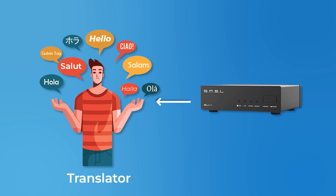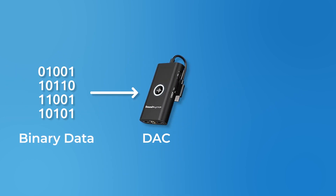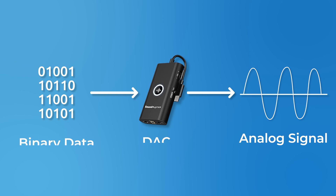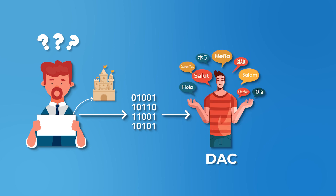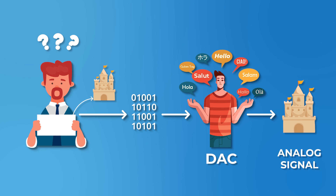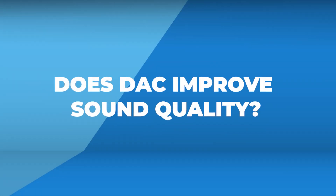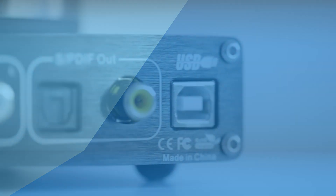Think of a DAC like a translator: it takes binary data — zeros and ones — and turns it into analog signals that our senses can grasp. Imagine you're given intricate instructions in an unfamiliar language, like a blueprint to build a sandcastle, but it's written in binary — a language you can't read. That's where the DAC steps in. It deciphers these binary instructions and constructs the sandcastle for you; the sandcastle becomes the analog signal, a tangible outcome of the digital data translation.